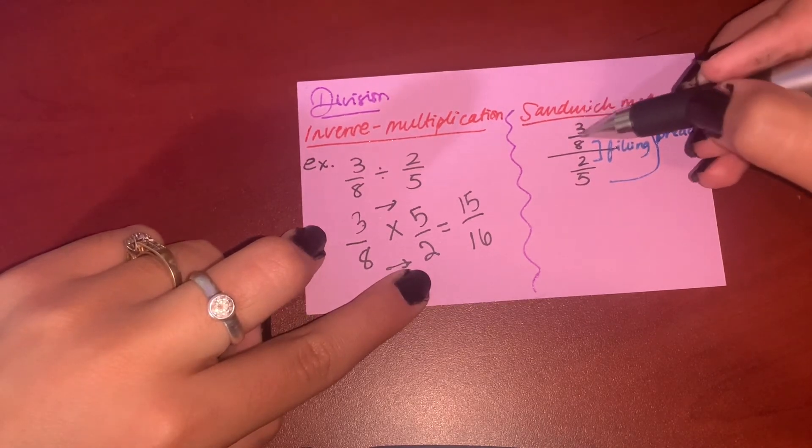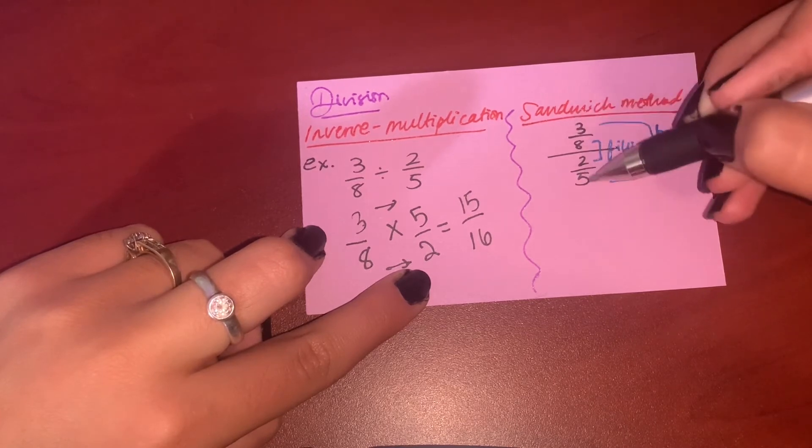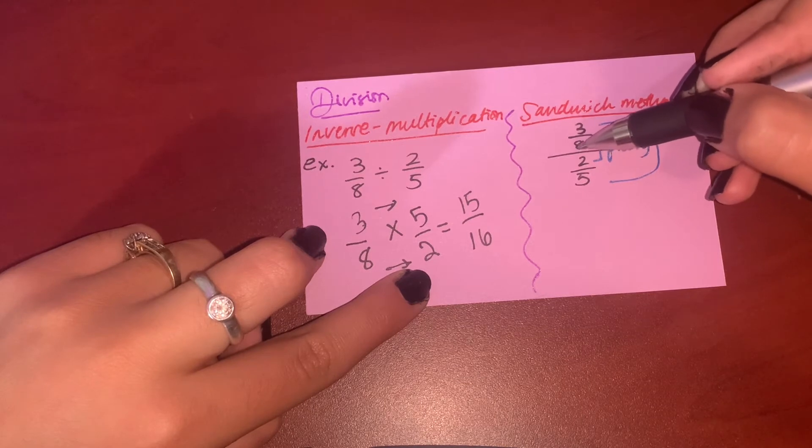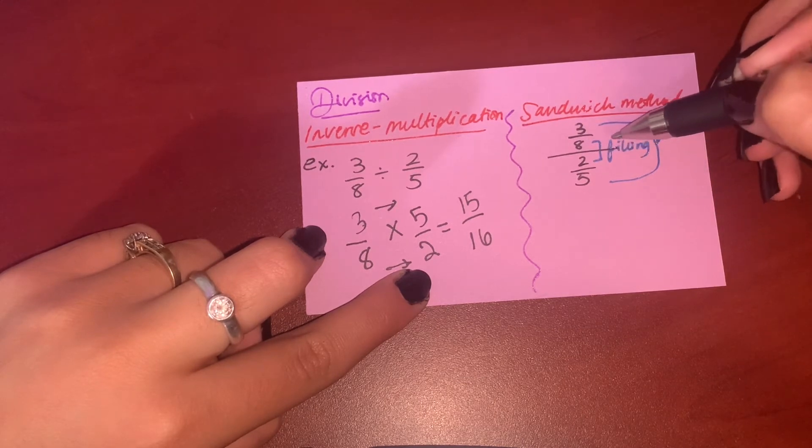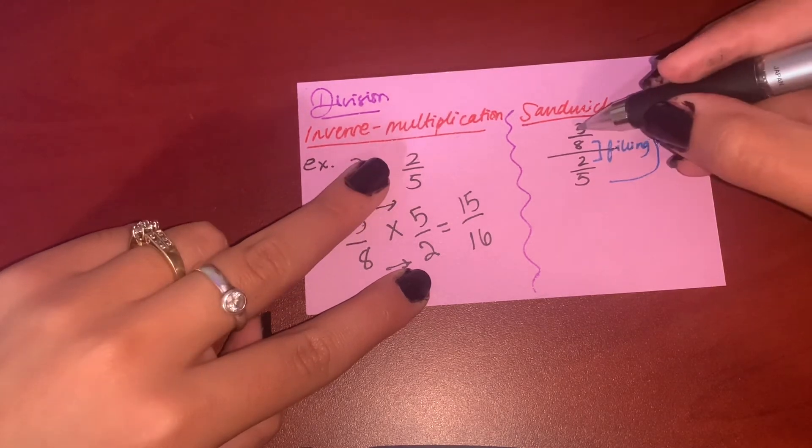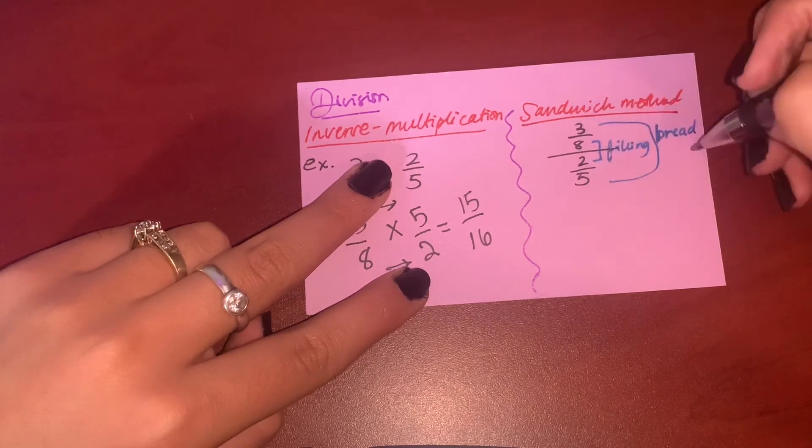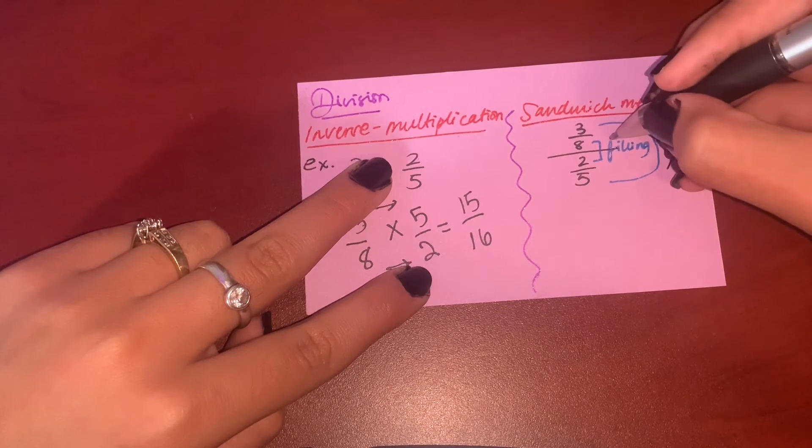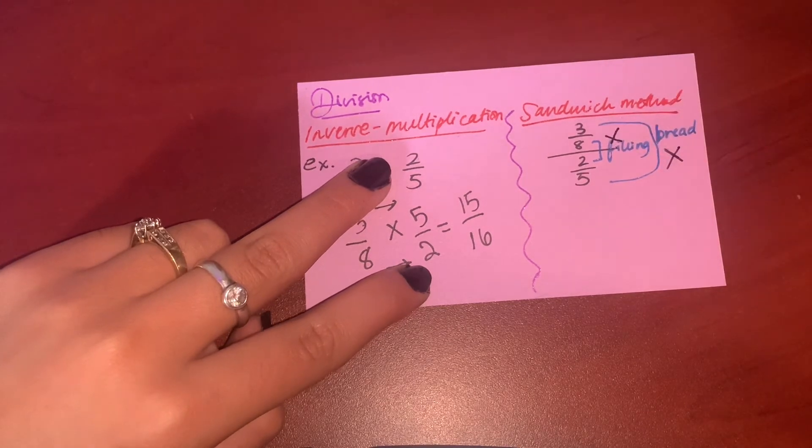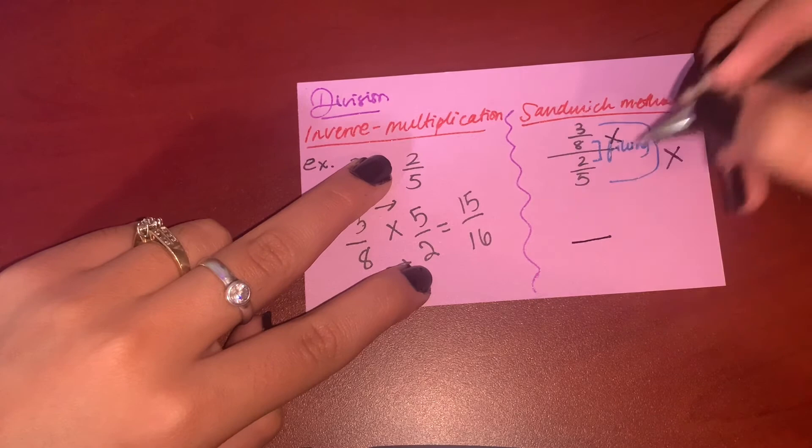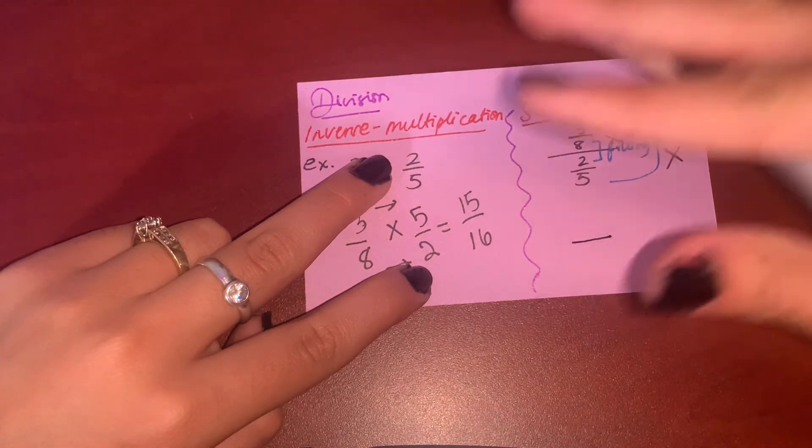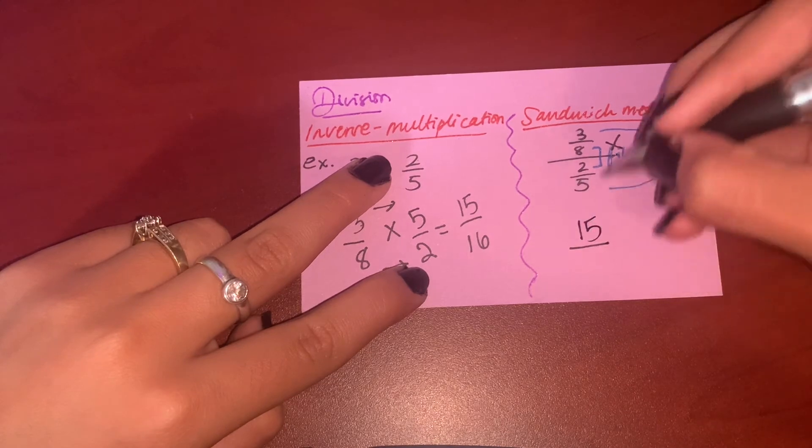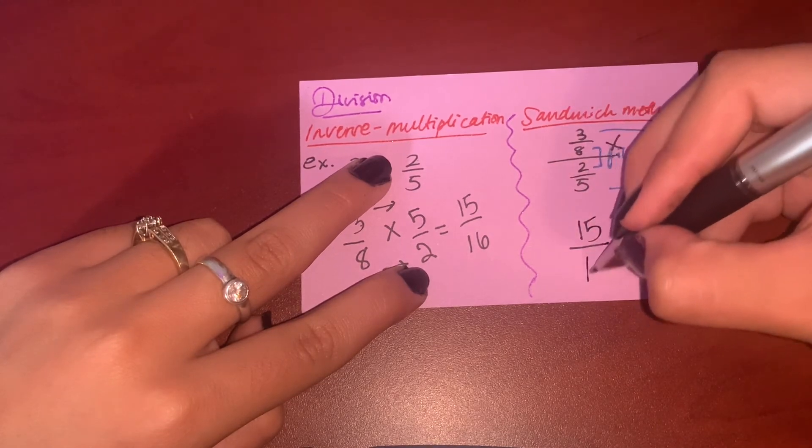Now the ends of it is the bread, okay, and the inside part, this and this, is the filling. So it's gonna get multiplied—3 with 5 is gonna get multiplied, 8 multiplied by 2 is also gonna get multiplied. So the bread part will go over, because in the sandwich you see the bread is up. So 3 multiplied by 5 is 15, 8 multiplied by 2 is 16. You can use any of these methods; you will get the same answer.